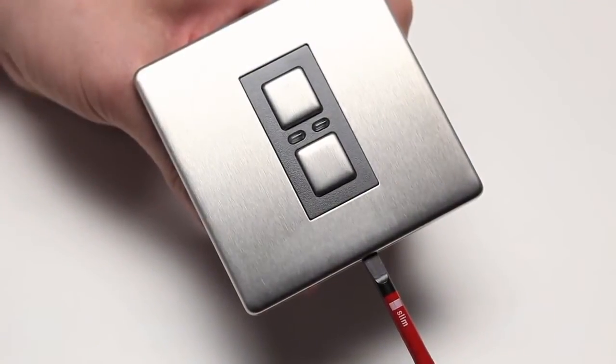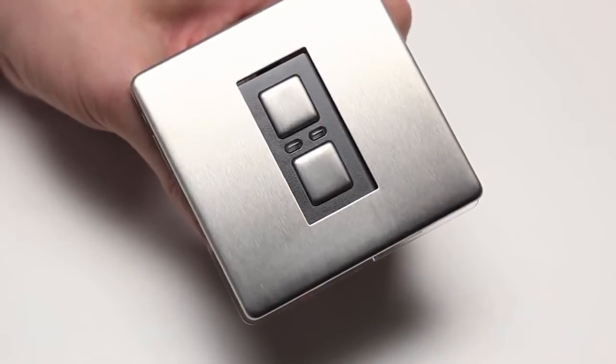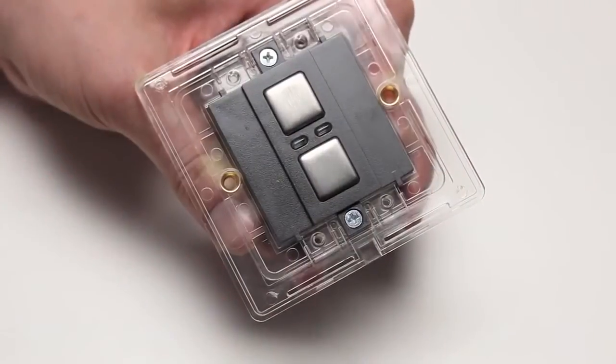Remove the dimmer switch faceplate by inserting a flathead screwdriver into the bottom slot and lifting it away from the unit.